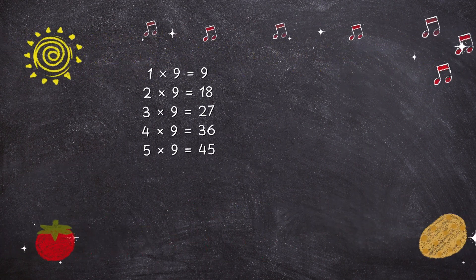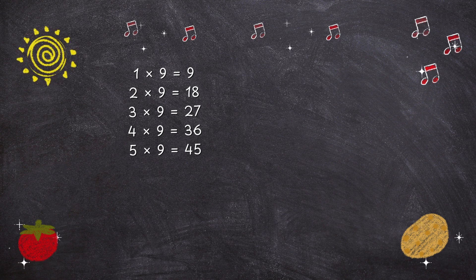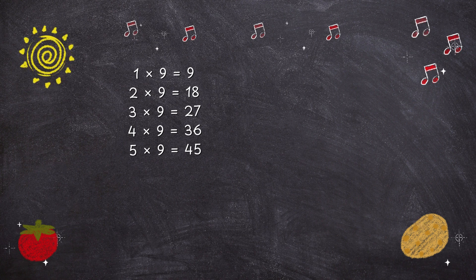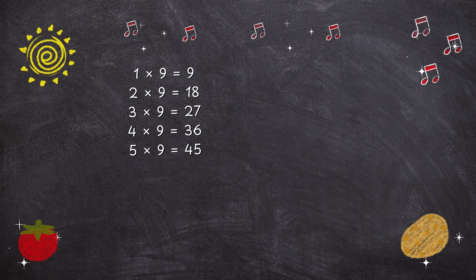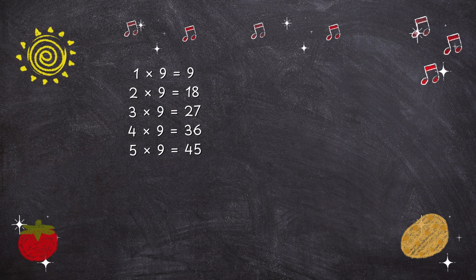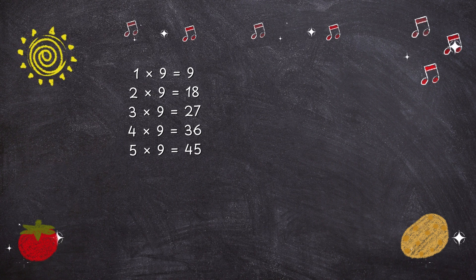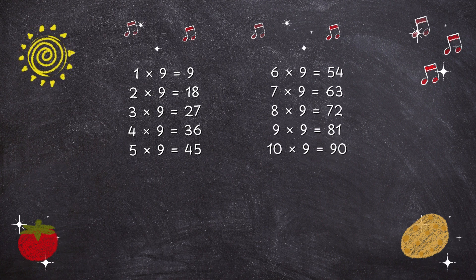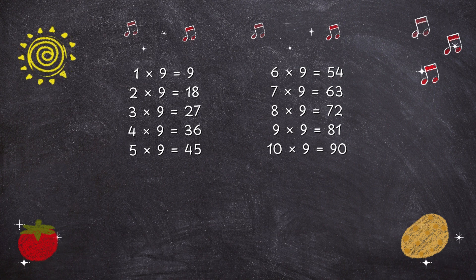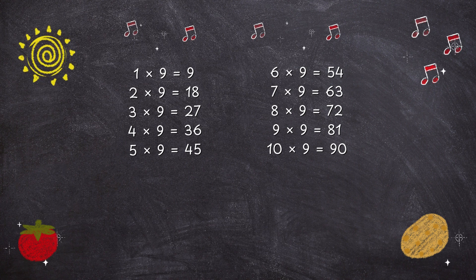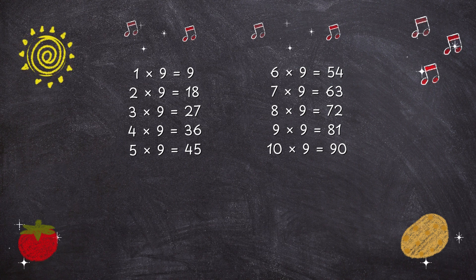1 times 9 is 9. 2 times 9 is 18. 3 times 9 is 27. 4 times 9 is 36. 5 times 9 is 45. 6 times 9 is 54. 7 times 9 is 63. 8 times 9 is 72.